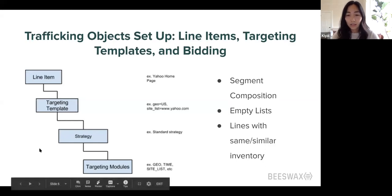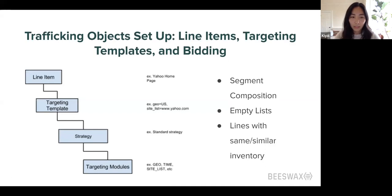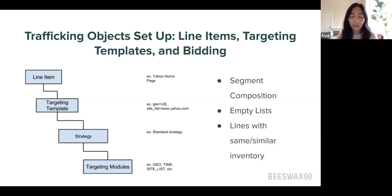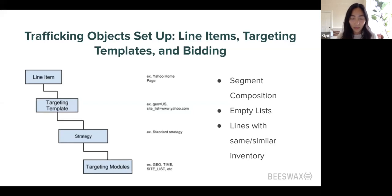For lines with the same or similar inventory: within a campaign you might set up two lines with two different CPM bids to test — say one at $9 and one at $10 — targeting the exact same inventory with the same bidding strategy. What happens is the two lines end up competing, and the $10 CPM bid will beat out the $9 CPM bid. So set up your lines as differentiated as possible so you're not competing with yourself and losing bids because lines are targeting the same inventory.